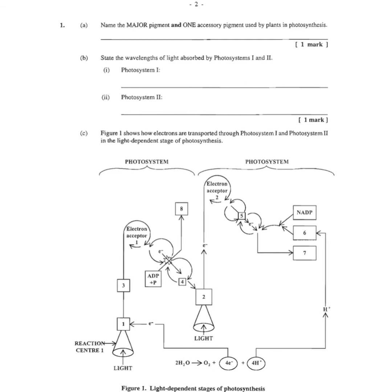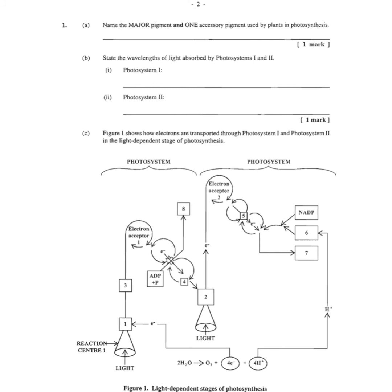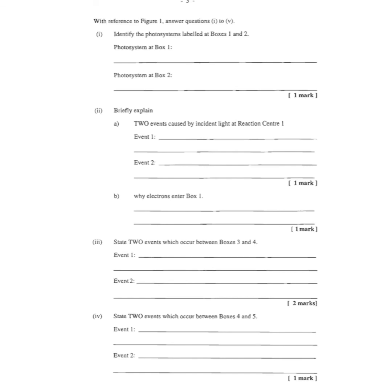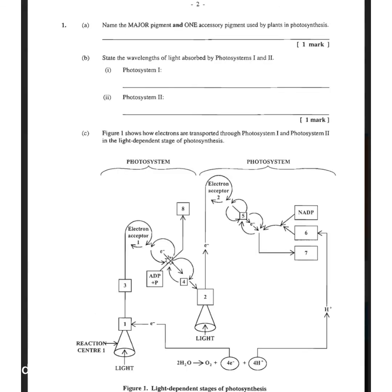Part B asks to state the wavelengths of light absorbed by photosystem 1 and 2. From the video: photosystem 1 is 700 nanometers and photosystem 2 is 680 nanometers. For the next question, figure 1 shows electrons being transported through photosystem 1 and 2. Photosystem 2 is at a lower wavelength of 680 and photosystem 1 at a higher wavelength of 700 nanometers, so box 1 is photosystem 2 and box 2 is photosystem 1.